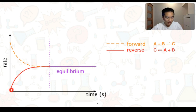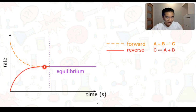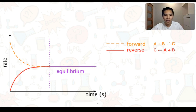In contrast, the backward or reverse reaction starts at zero but the rate increases until it reaches the same steady point. The forward and backward reaction rates converge, and where they converge is when we say the system has reached equilibrium — that is, the rate of the forward reaction equals the rate of the backward reaction.